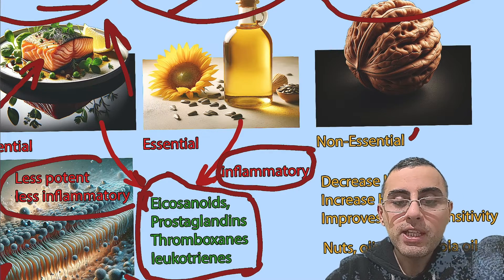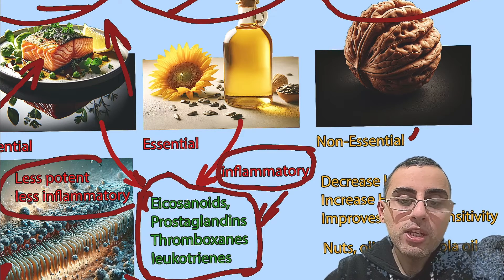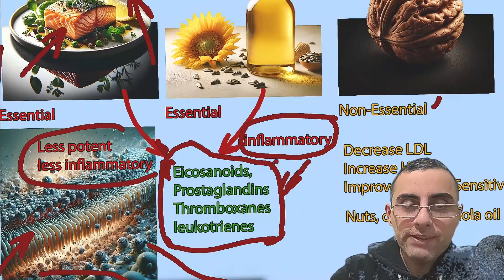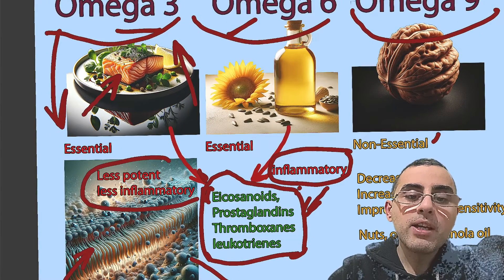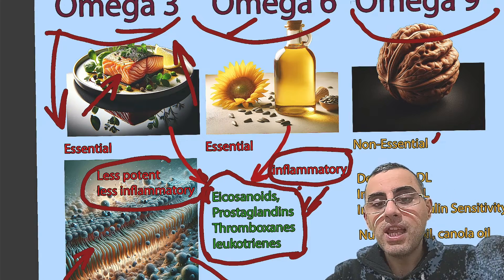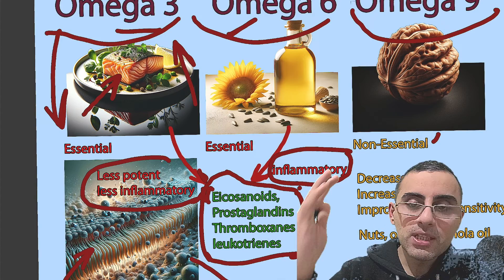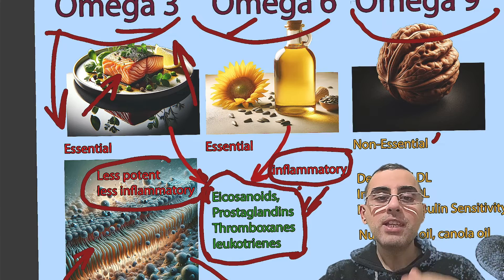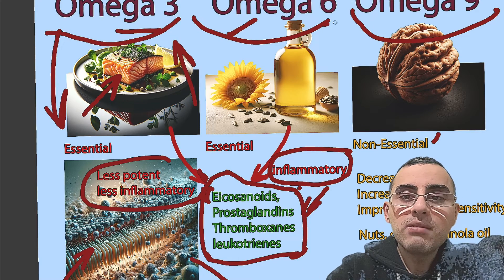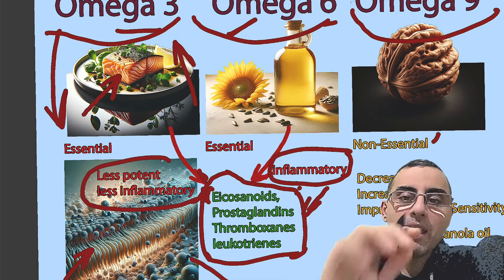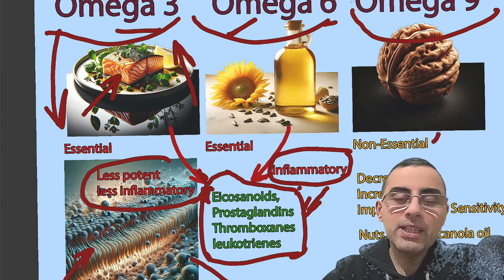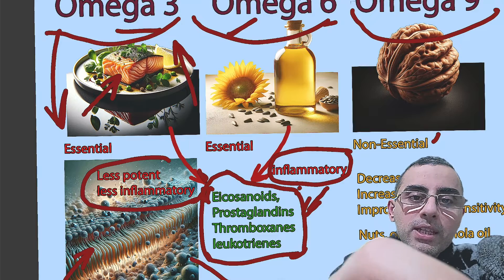Here is the key difference: eicosanoids derived from omega-3 are less potent and have less inflammatory action, while eicosanoids from omega-6 are more inflammatory and more potent. That's why omega-6 promotes thrombus formation and inflammation. So eicosanoids from omega-6 are pro-inflammatory and from omega-3 are anti-inflammatory — omega-6 increases inflammation, omega-3 decreases it.